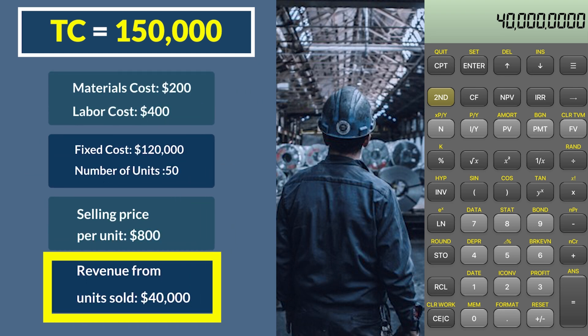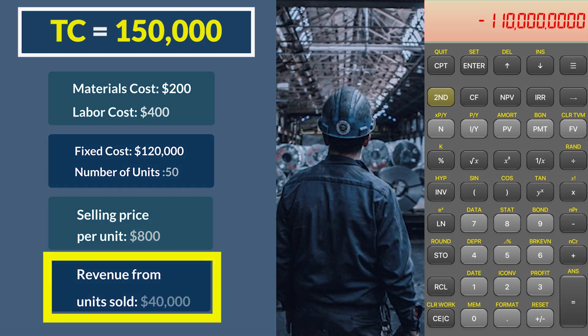So we have a problem. It cost us $150,000 to make the units, but we only make $40,000 in revenue — meaning we are $110,000 in the red. We have to fix that problem. Remember, I mentioned cost-volume-profit analysis — we're not doing that. We could increase the price, but we're not doing that either. We're going to solve this problem by producing more units.